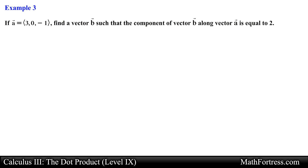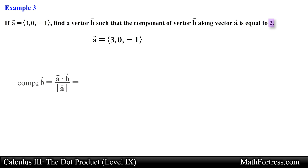Alright, let's go over the final example. If vector a equals (3, 0, -1), find a vector b such that the component of vector b along vector a is equal to 2. In this problem we are given vector a and are asked to find a vector b that has a scalar projection equal to 2. Let's go ahead and use the scalar projection formula and substitute the known values.